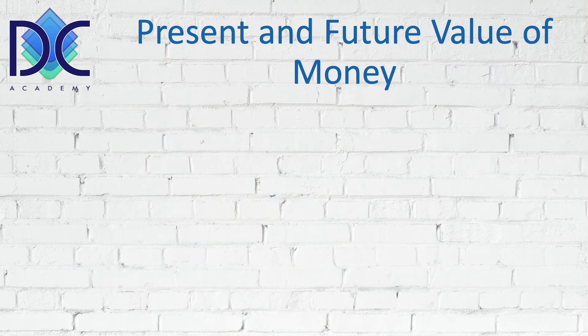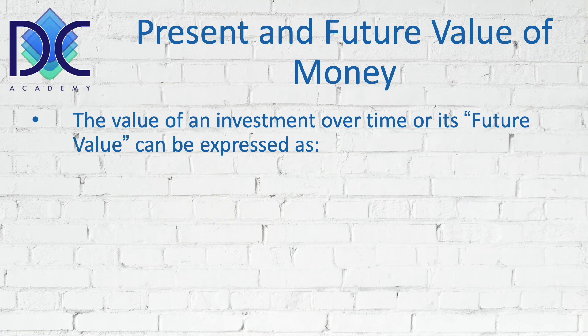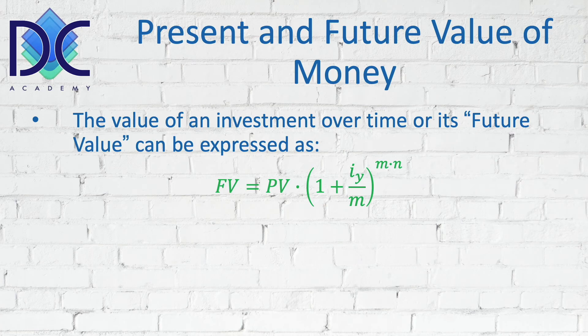When we look at the future value of an investment — let's call it FV — we have the present value, that's the investment we did today, and by putting it in some investment we expect an increase of value. Typically we have a yearly interest divided by the number of discounting periods M, and the future value of our present value — the investment we did today — is equal to the present value multiplied by (1 plus the yearly interest rate divided by M) to the power M times N.